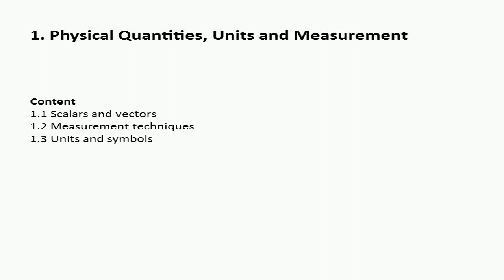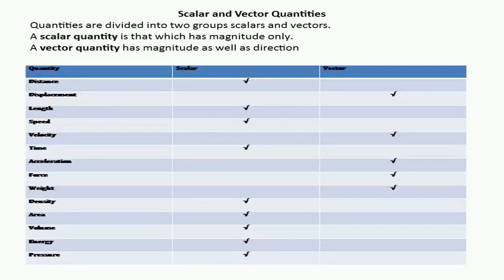In our first lecture, we have already discussed about the physical quantities and units. In the first lecture, we studied that physical quantities are those quantities which we can measure, and physical quantities are shown by their units. Now, in this lecture, we discuss that there are two types of physical quantities.